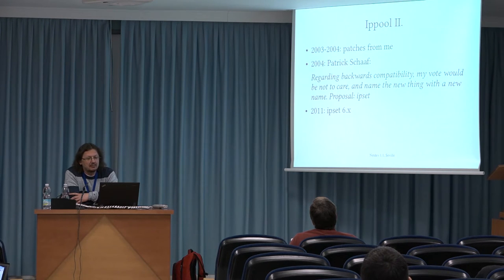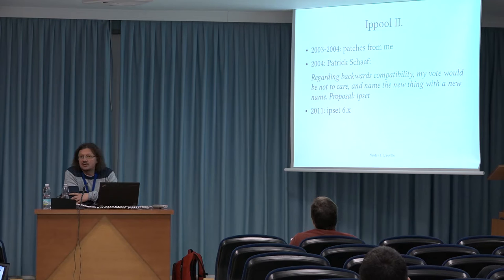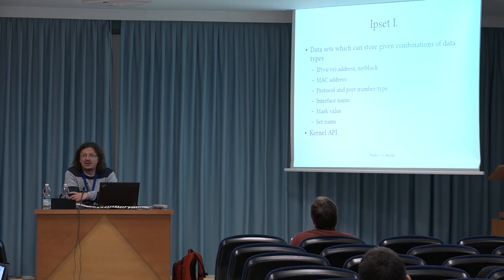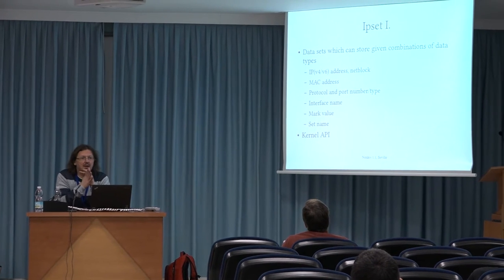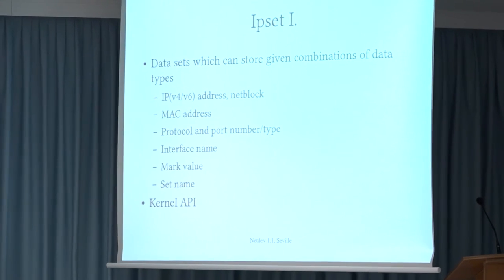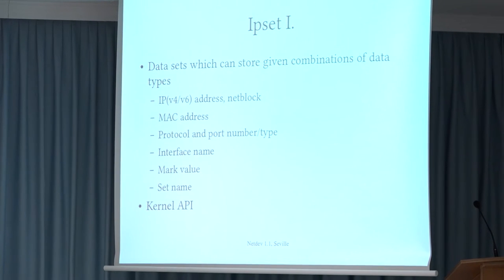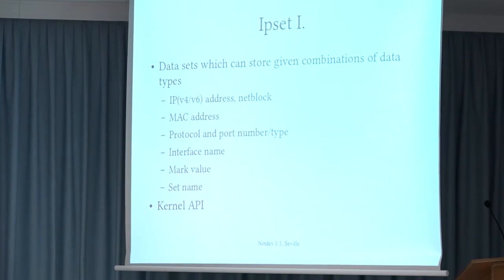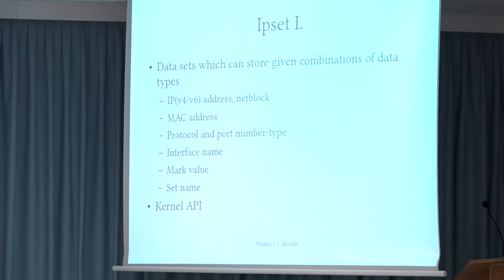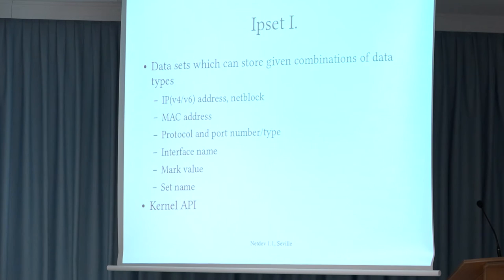The current IPSet main version number is 6, which was released first in 2011 after almost a complete rewriting of the whole system. So, what is IPSet? IPSet makes it possible to store data sets in the kernel and provides the API to look up, add, or delete elements from these sets. A given list of data types can be stored in the set or a given combination of them: IP address only, network address only, network blocks and interface name pairs, or IP address and port number, and IP address triples, and so on.